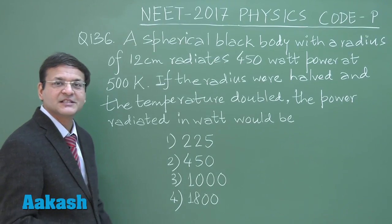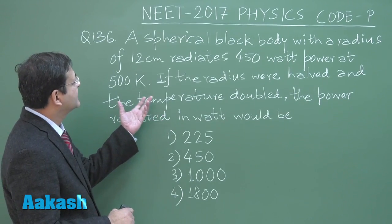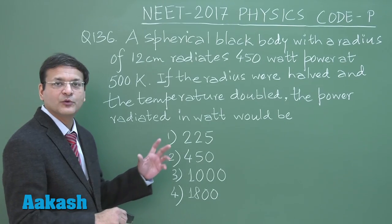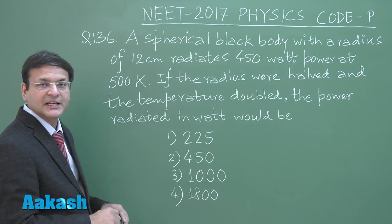As you can see the first question, this is related to heat and that to radiation. Here this question, it says that a spherical black body with a radius of 12 centimeter radiates 450 watt. And a particular temperature has been given, you can see 500 Kelvin.